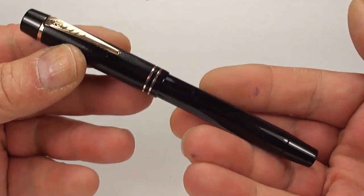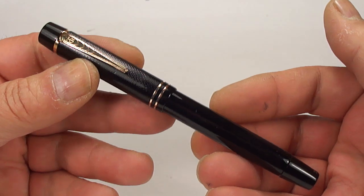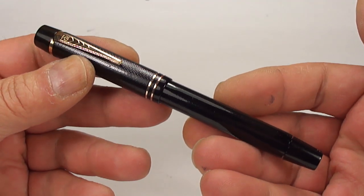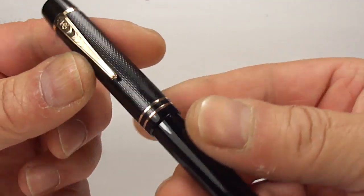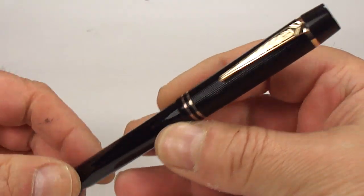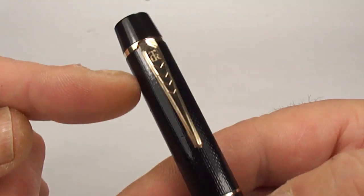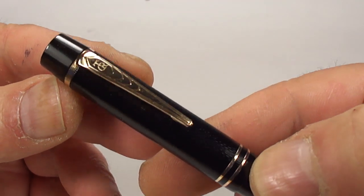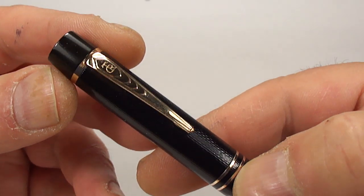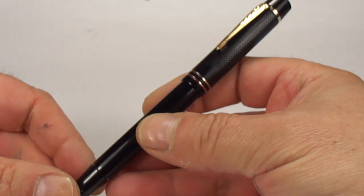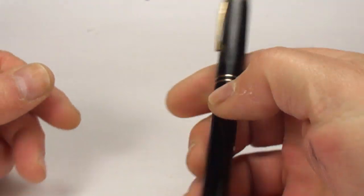So, there we have it, an absolutely gorgeous example of the Onoto, the pen, the 6233 7.7 in this black hard rubber with gold filled trim with the chevron clip to the top there. All in all, an absolutely gorgeous pen.